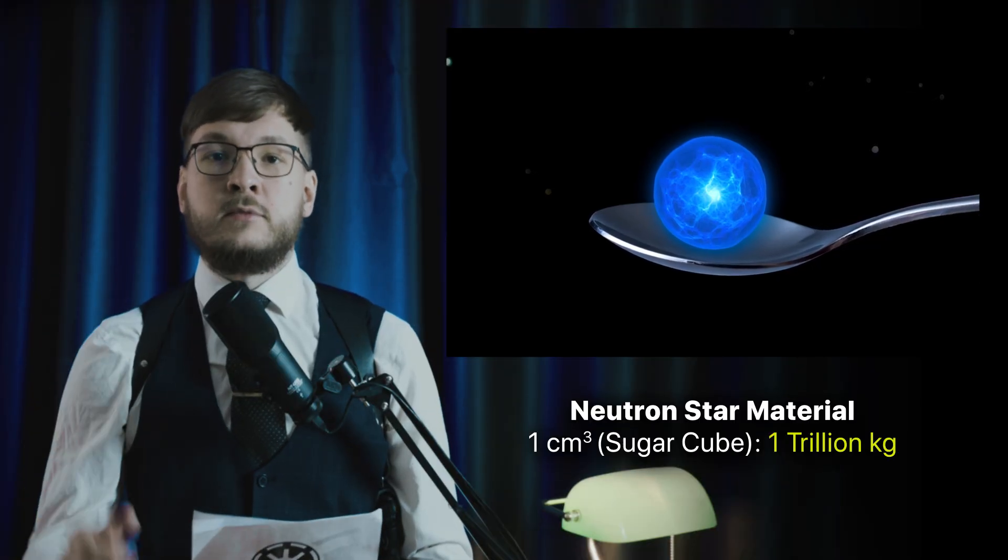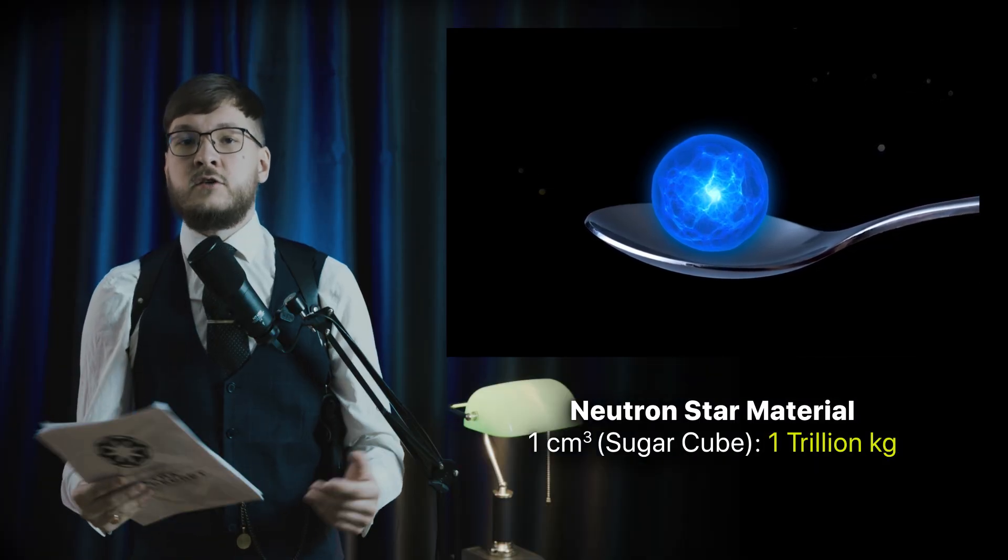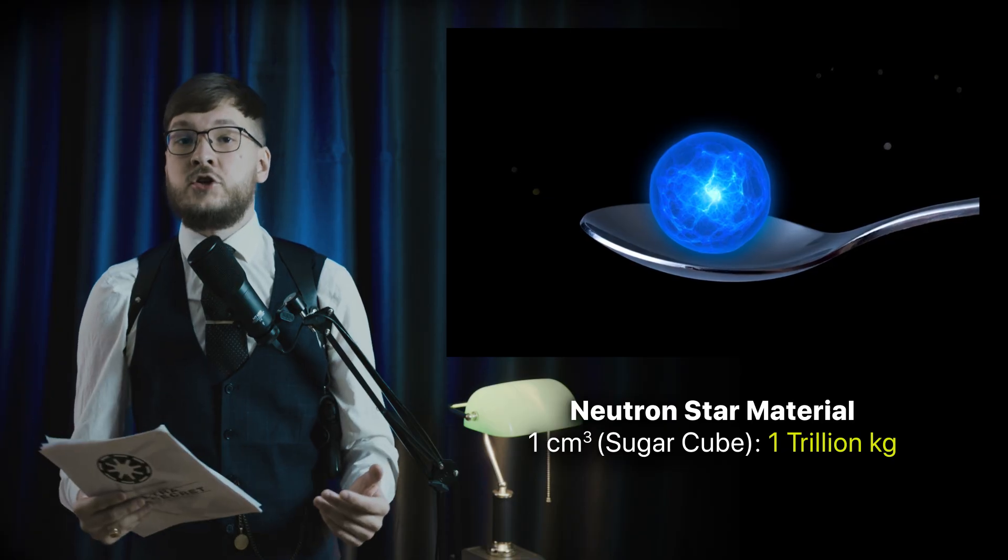To get an idea of how dense they are, one sugar cube of neutron star would weigh about 1 trillion kilograms or 1 billion tons on earth, about as much as a mountain. But neutron stars have other amazing properties.